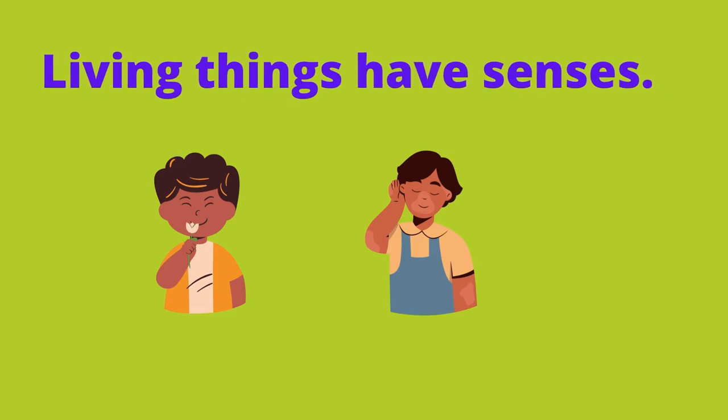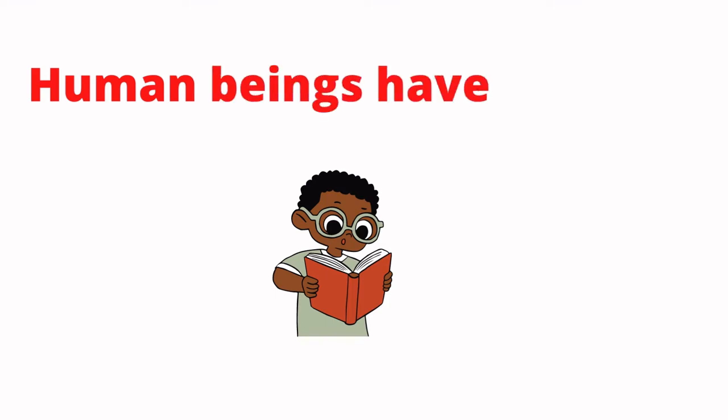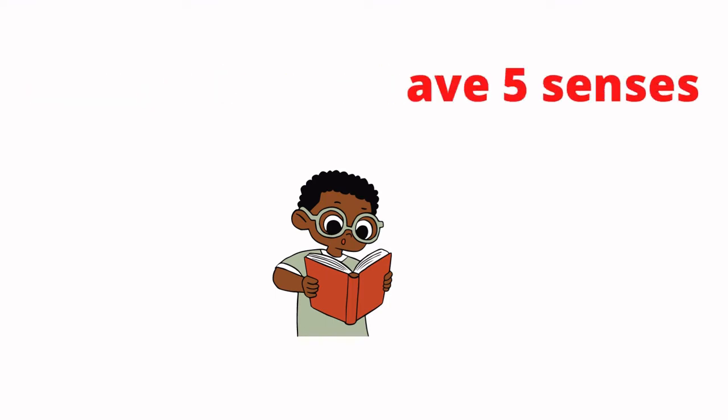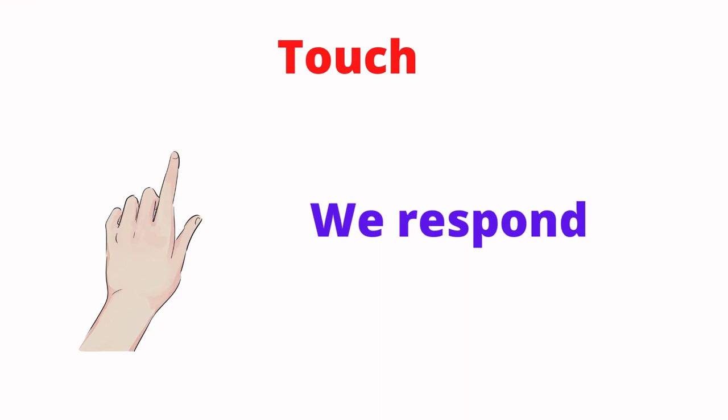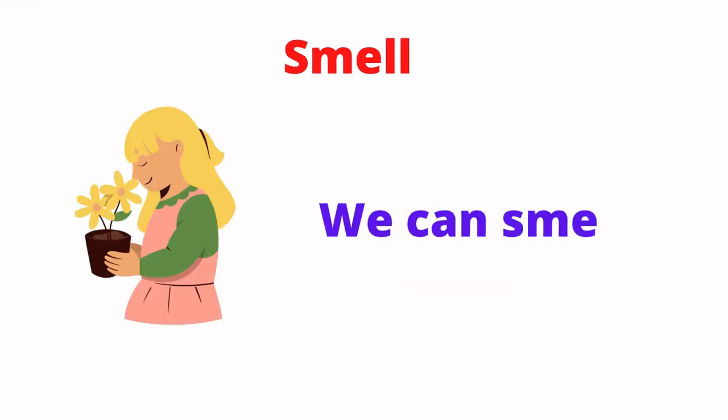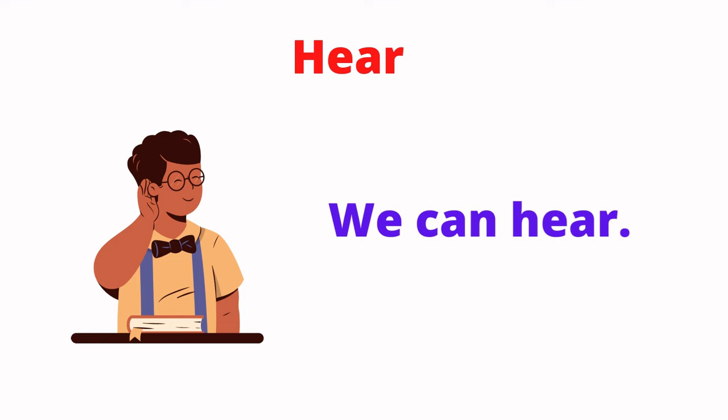Living things have senses. Human beings have five senses. Eyesight - we can see. Touch - we respond to touch. Smell - we can smell through our nose. Taste - we can taste. Hear - we can hear the sounds.